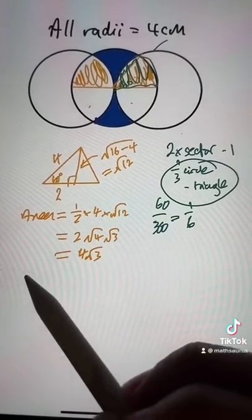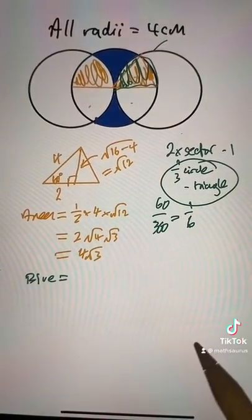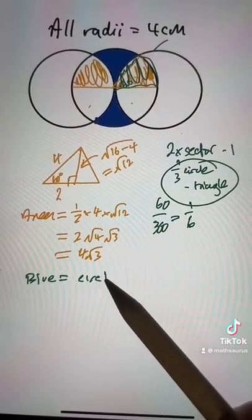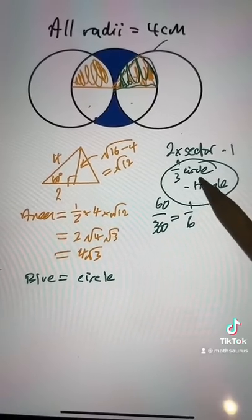So to work out the blue area, all I've got to do now is do a circle, and then I've got to subtract this four times.